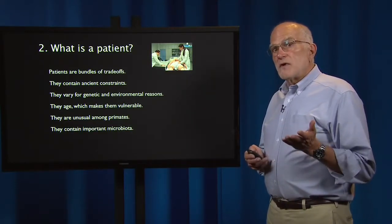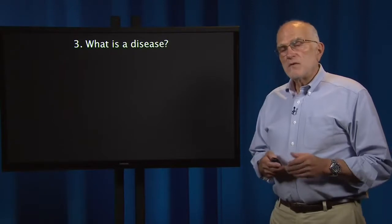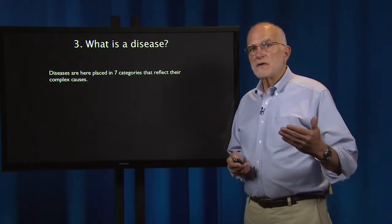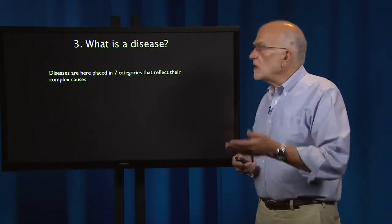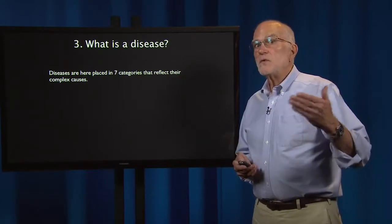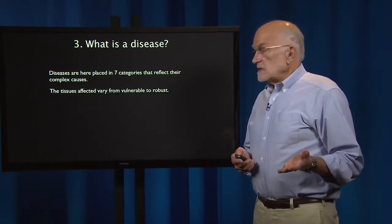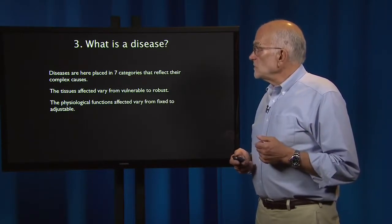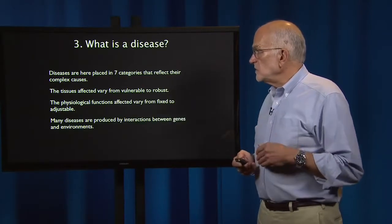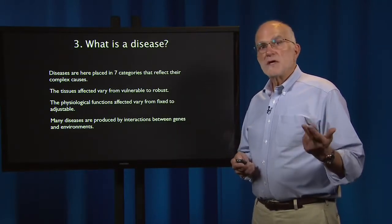Patients also contain very important microbiota, which are playing an increasing role in medical explanation. When we come to what is a disease, instead of using the traditional categories of infectious versus chronic, we place diseases into seven categories that reflect their causes and which relate to whether evolution could have affected defenses or not. Tissues vary from vulnerable to robust, physiological functions vary from fixed to adjustable, and many diseases are produced by interactions between genes and environment.